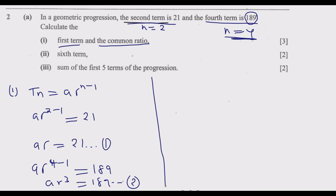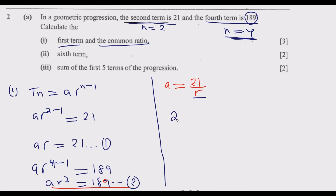From the first equation, I make A the subject by dividing both sides by R, giving A = 21/R. Then I substitute this into the second equation: (21/R) × R³ = 189. This simplifies because R cancels partially, leaving 21R² = 189.